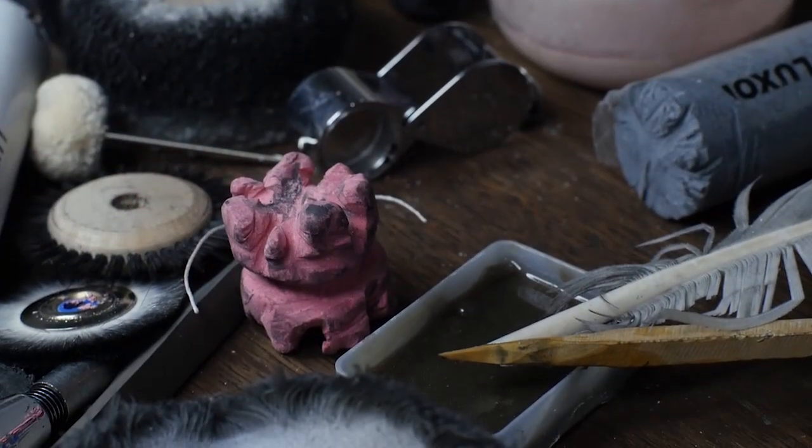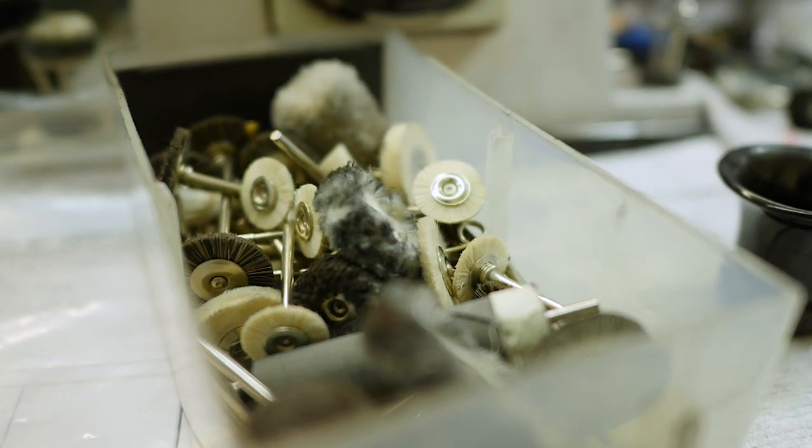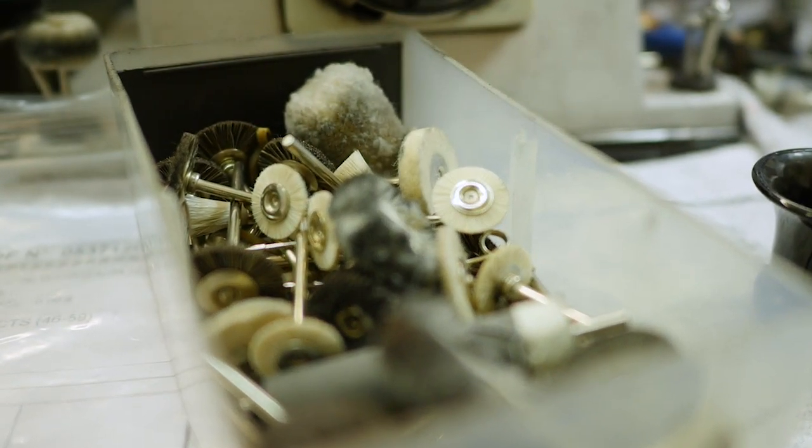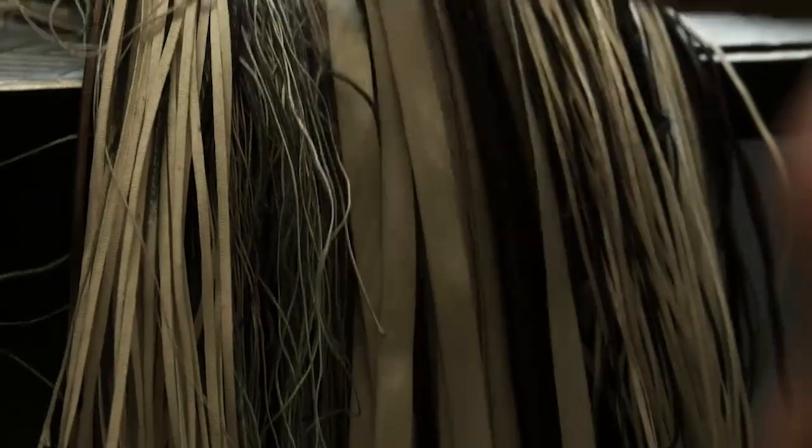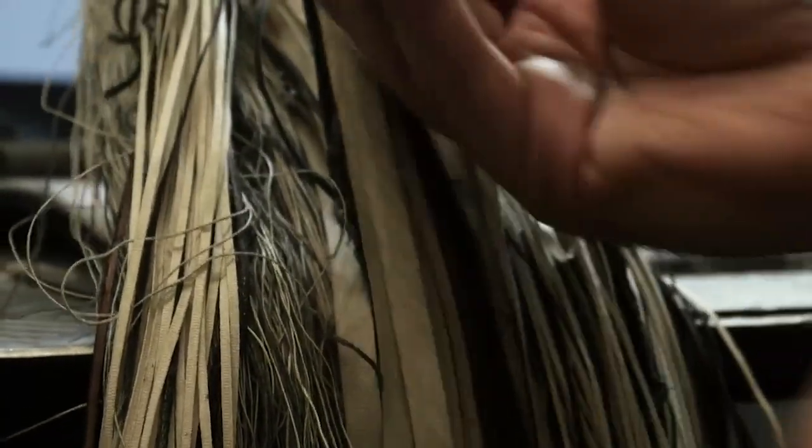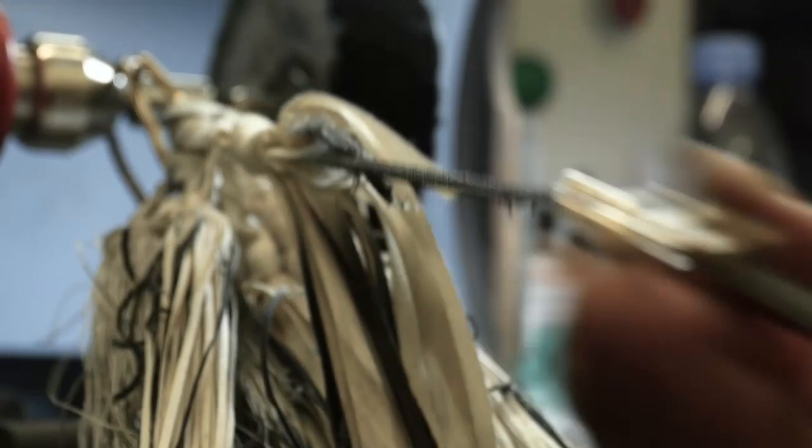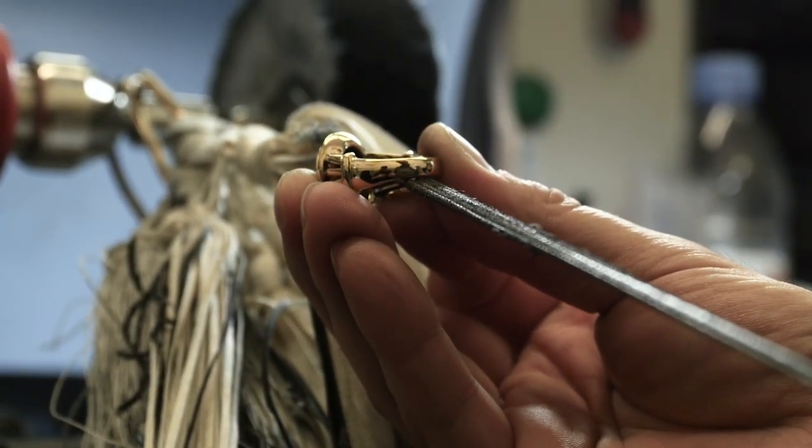Pâtes à polir de différents grains, brosses plus ou moins dures montées sur un tour à vis, bâtonnets de buis, plumes, fils. Les outils sont nombreux et variés, adaptés à tous les métaux précieux et à toutes les formes de bijoux.